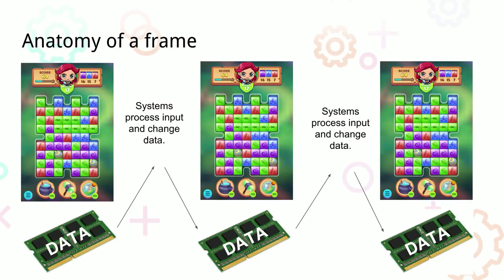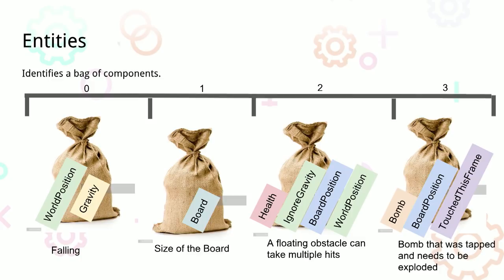Talking about entities — if you're new to ECS and used to object-oriented programming, you might think of it as a bag of components. What components are attached to your entity is what determines what that entity is. For example, something with a world position and a gravity component is a falling thing. We have a board component that just holds the board size, a health component meaning a block takes multiple hits to break, and an ignore gravity component meaning it never falls.